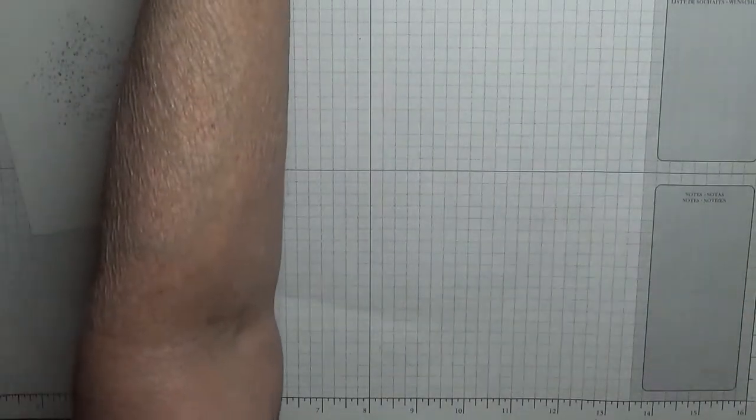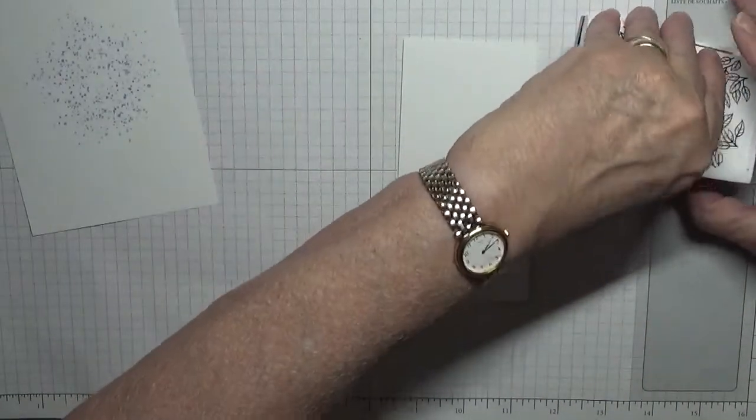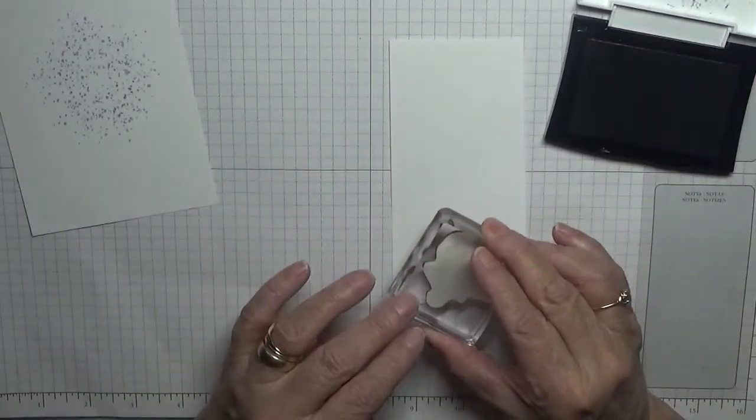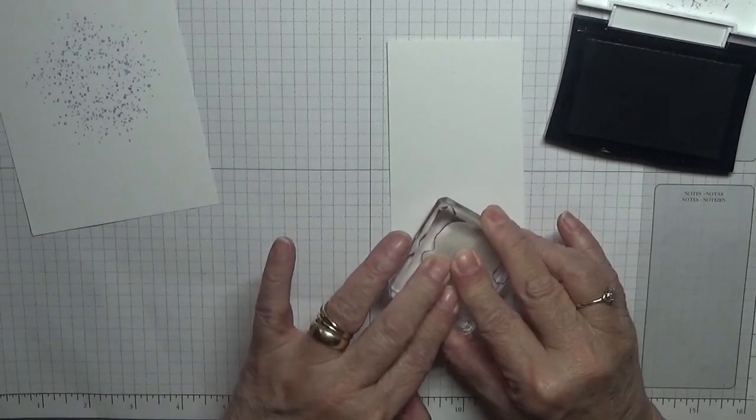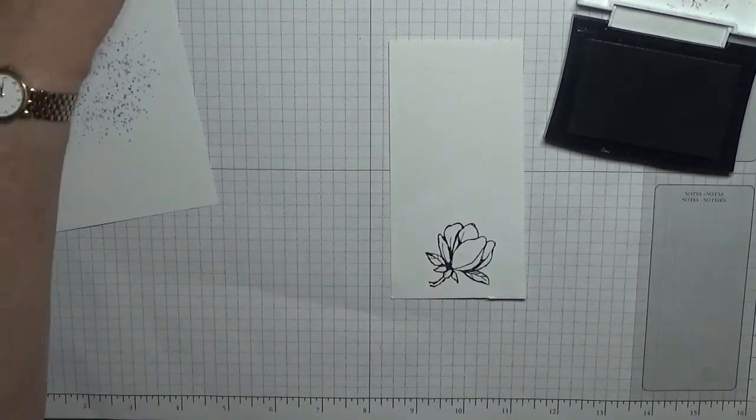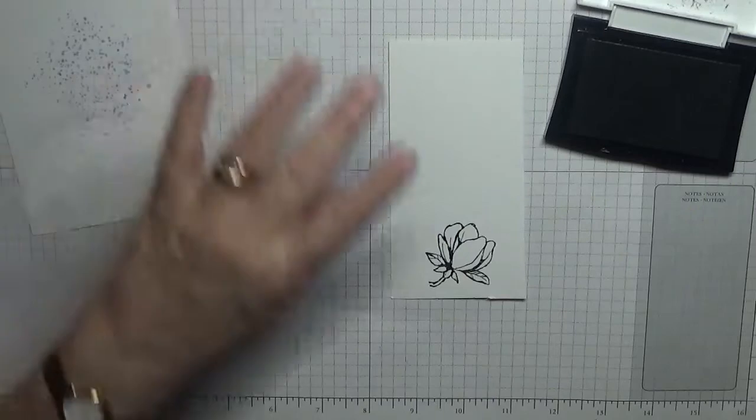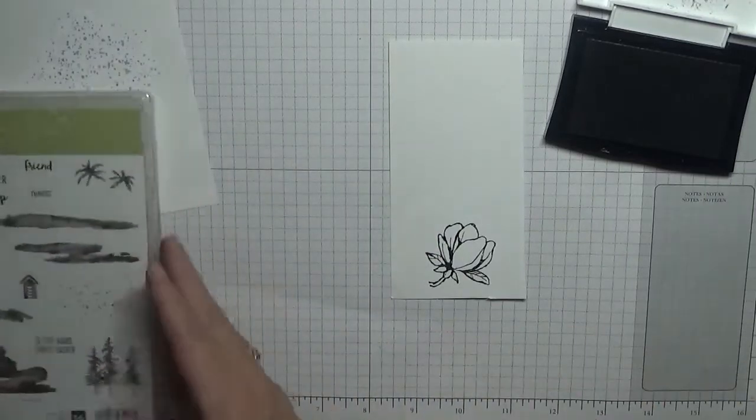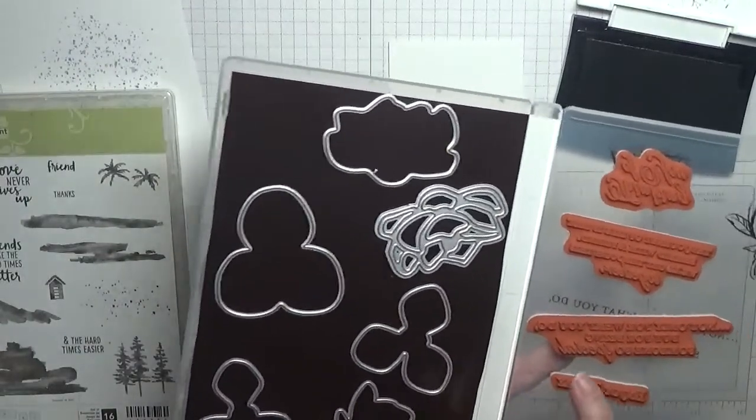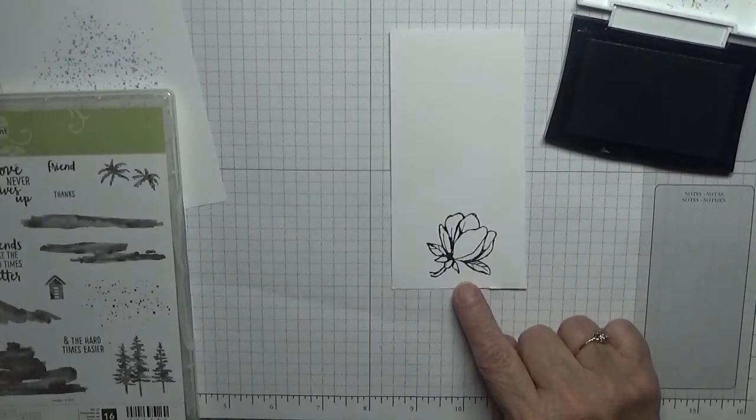We're going to stamp the flower on a bit of scrap and then we're going to fussy cut it out. No we're not. I forgot there's dies with this. But I have already got one cut out and coloured. If you're doing that and got the dies you'd use this. But I will say it is really easy to fussy cut this one.